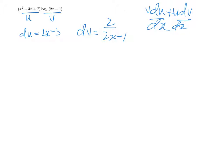So then we just substitute these values. Now we're going to write v du, so v is log base e of 2x - 1 times du, which is 2x - 3, plus u dv.